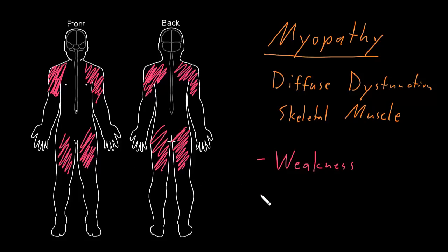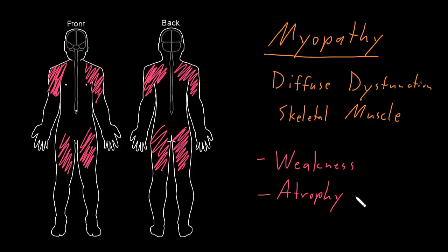Atrophy may also develop in addition to weakness over time. But the other lower motor neuron signs tend to occur less often and to a lesser severity than they do with dysfunction of the lower motor neurons themselves. So the myopathy syndrome can be fairly subtle, especially with mild severity syndromes.